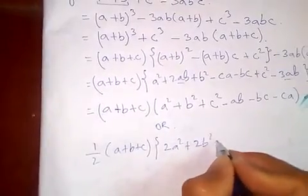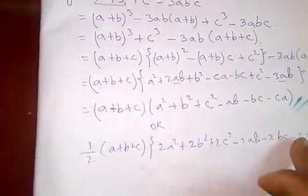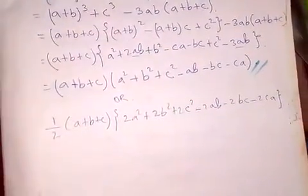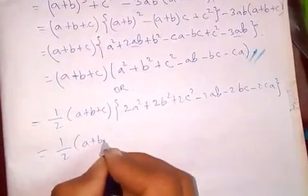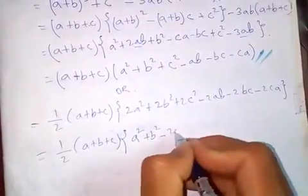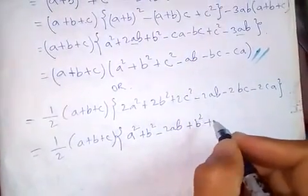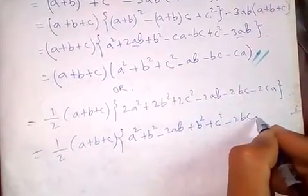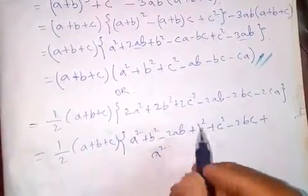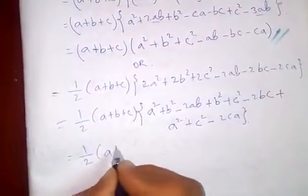Taking half of (a + b + c), and multiplying inside by 2, we get: half of (a + b + c) times [2a² + 2b² + 2c² - 2ab - 2bc - 2ca]. Now grouping: take one a² and one b² minus 2ab, plus one b² and one c² minus 2bc, plus one a² and one c² minus 2ca.